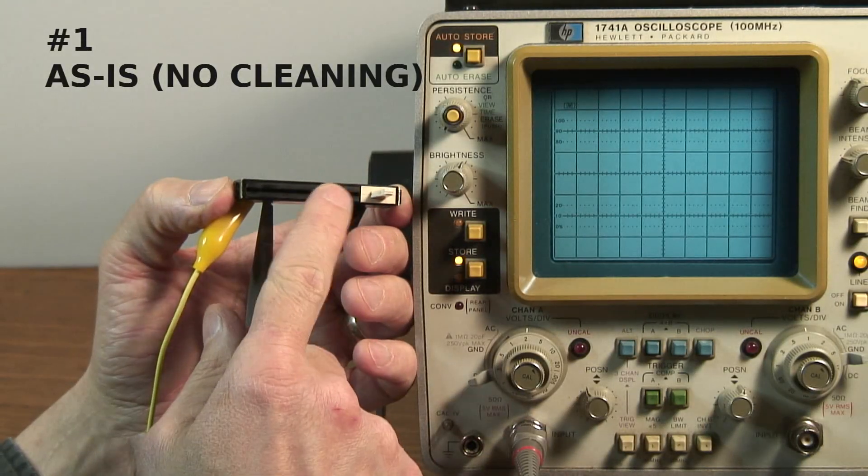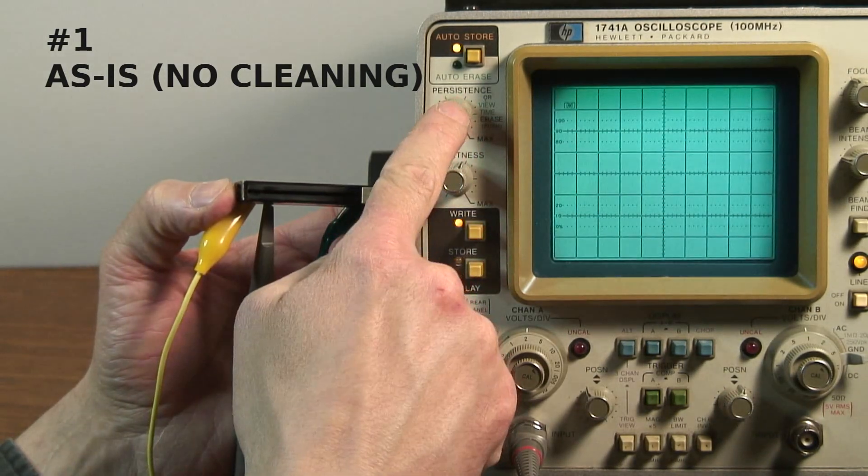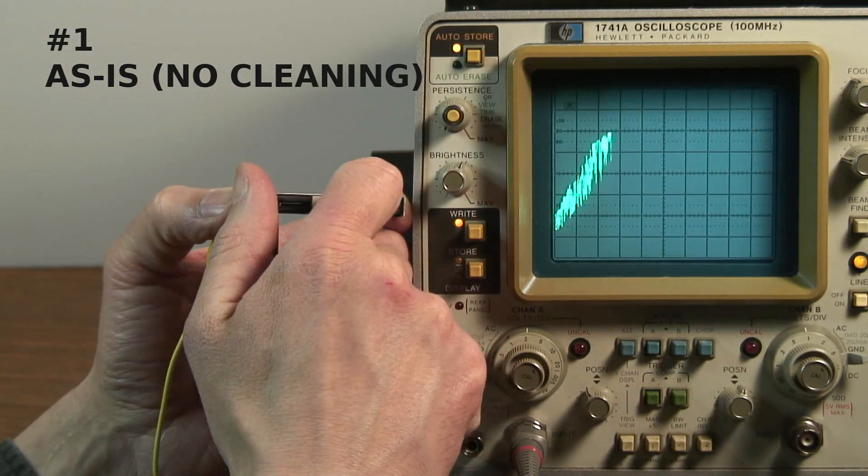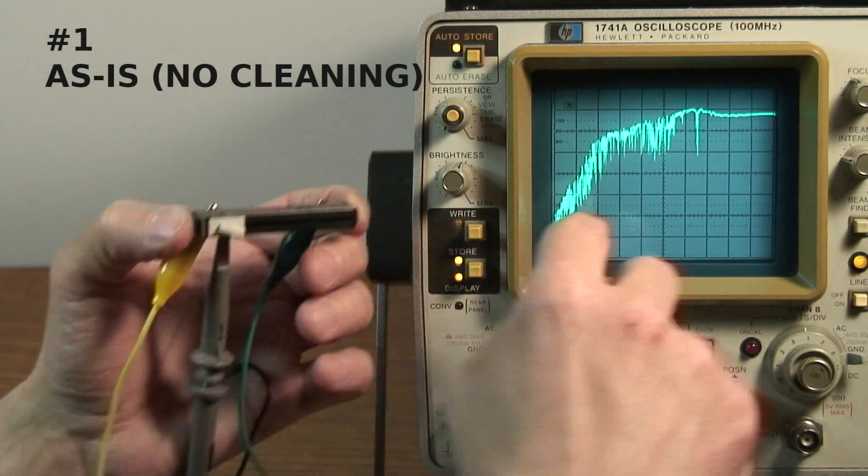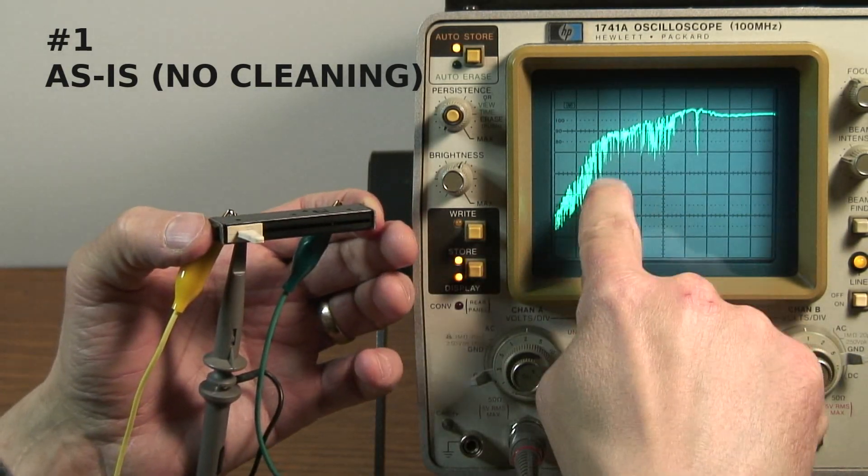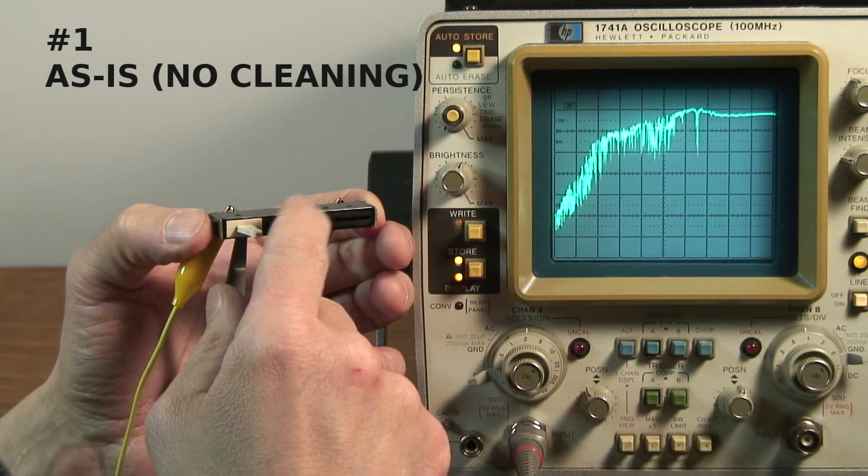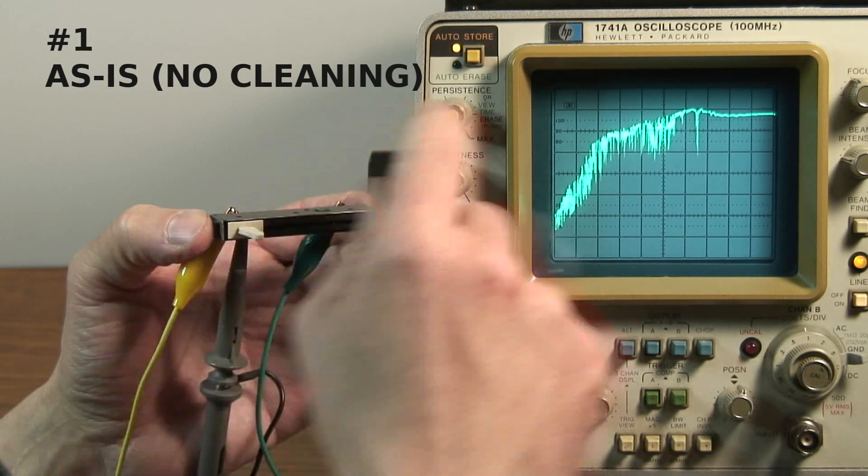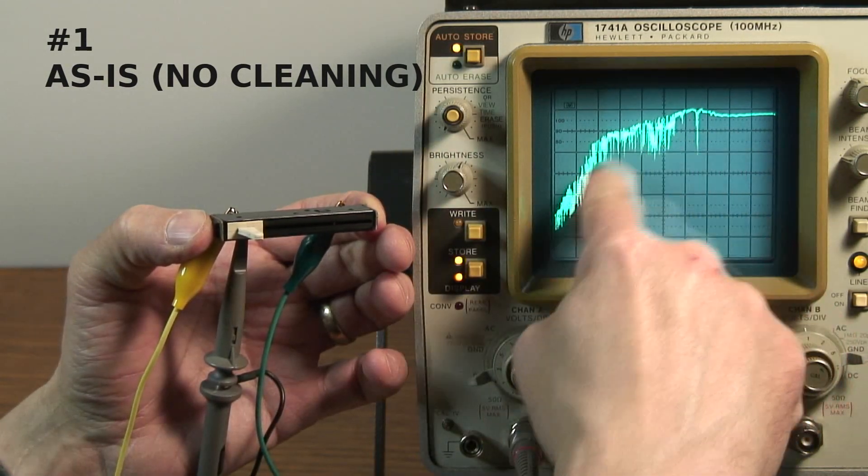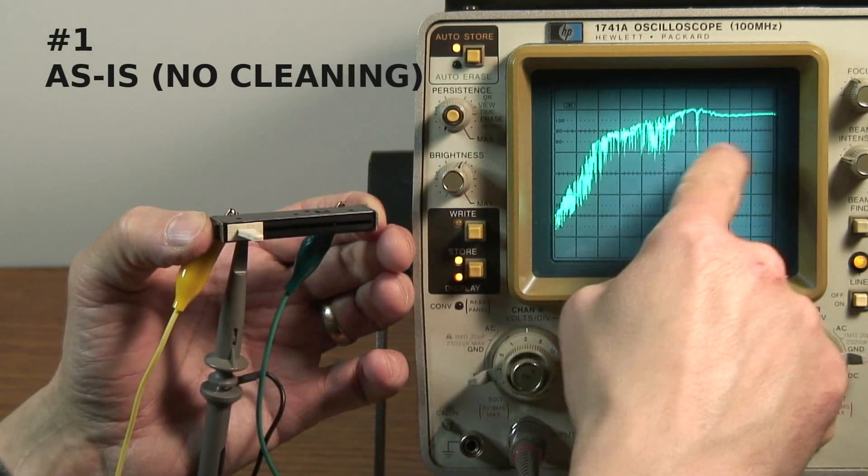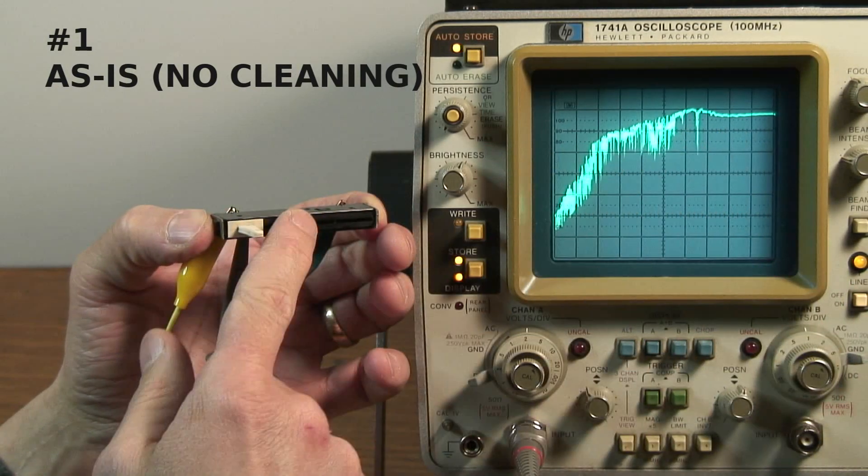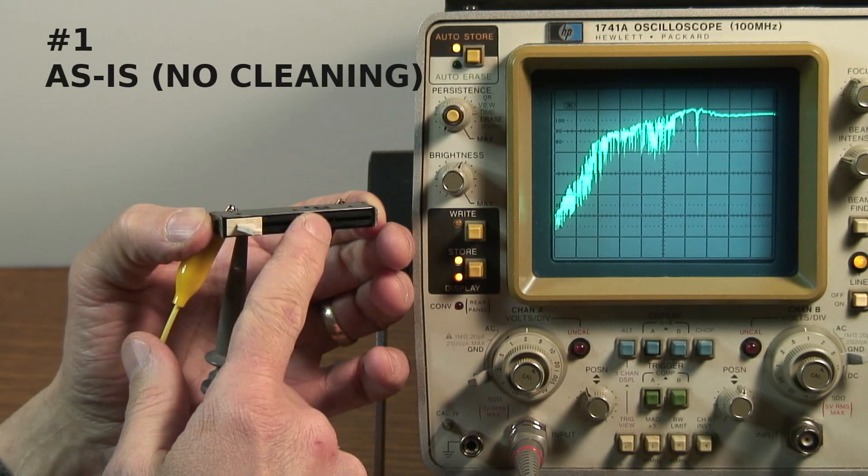This is fader number one. It was the one that didn't have any cleaning whatsoever. So let's see what we get. Okay, that's a mess. You can see the spiky pattern where the wiper was losing contact with the resistive strip from a buildup of dirt and grime. So this would be unacceptable in any piece of equipment.